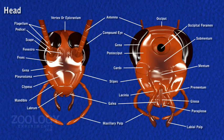The roof of the head is formed by two epicranial plates jointed in front by an inverted Y-shaped epicranial suture. The unpaired triangular frons lies between the arms of the epicranial suture. A broad rectangular clypeus forms the lower part of the face.